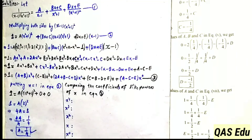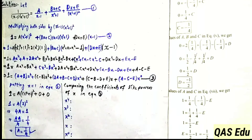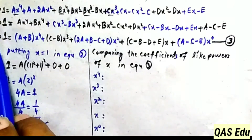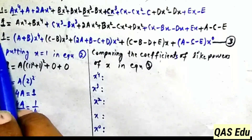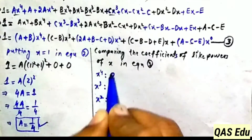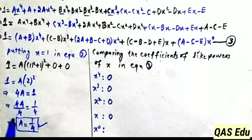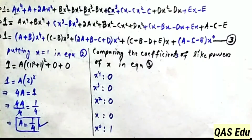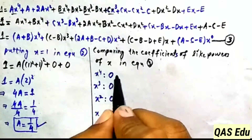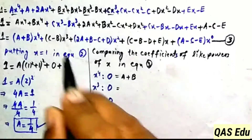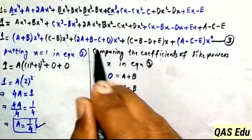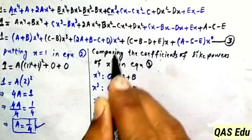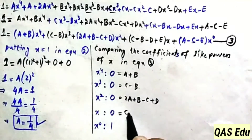Note: there may be a correction needed; the answer in the book may be different. Now from equation number 3, on the left-hand side the coefficients of x power 4, x power 3, x power 2, x power 1 are all 0, and the constant is 1. On the right-hand side, for x power 4, the coefficient is A plus B.